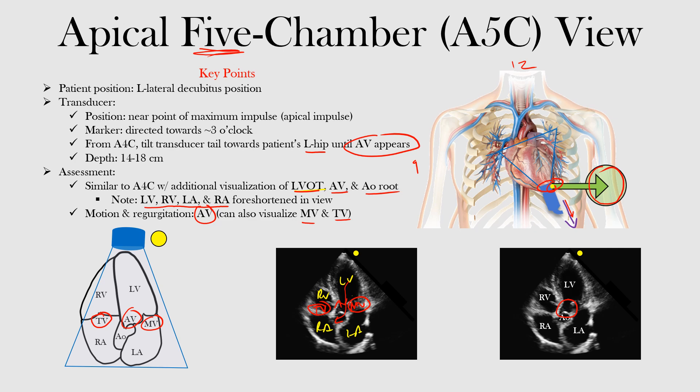Remember that the four chambers are foreshortened in this view. We can assess three different valves here: the mitral, the tricuspid, and we can look at the motion and any evidence of aortic regurgitation at the aortic valve. Hopefully that makes sense — that's the end of this lecture.